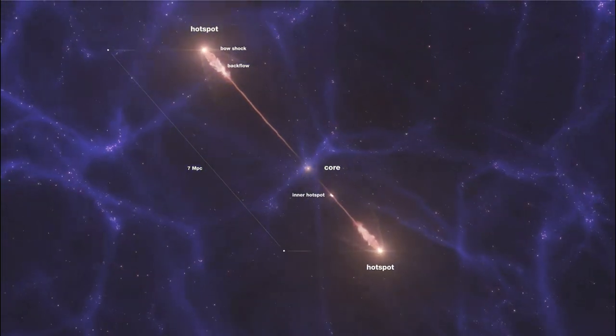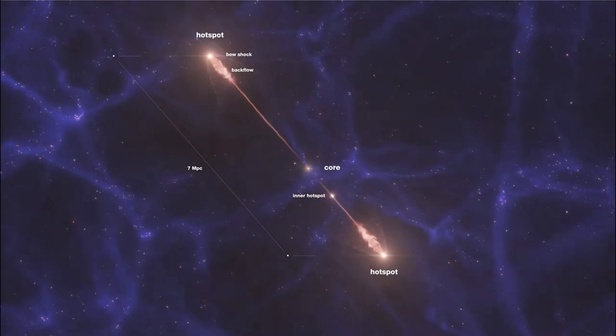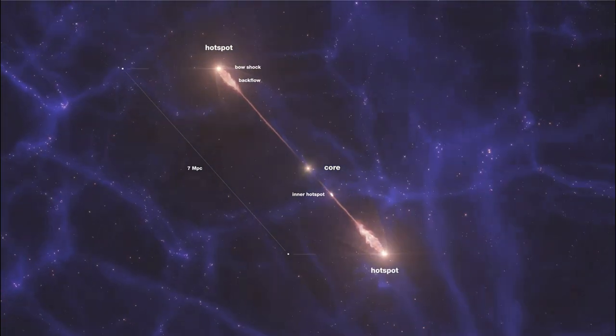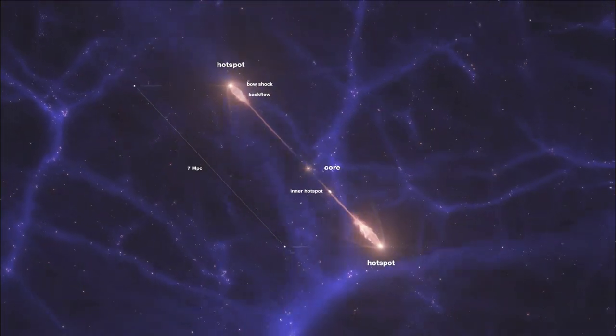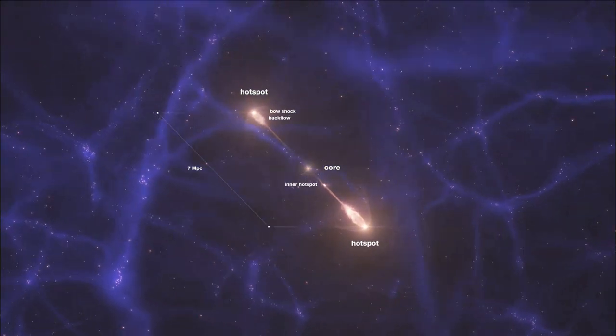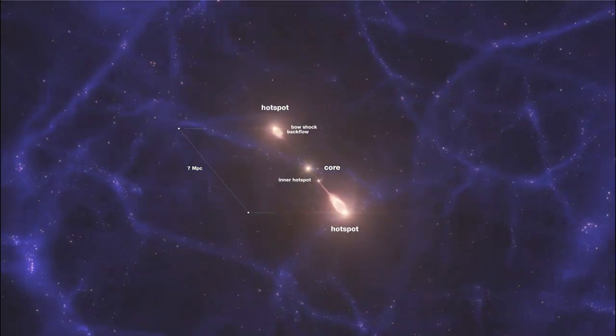which is where the material is then striking areas in the intergalactic medium. And in this case, we can see the bow shock as it occurs.